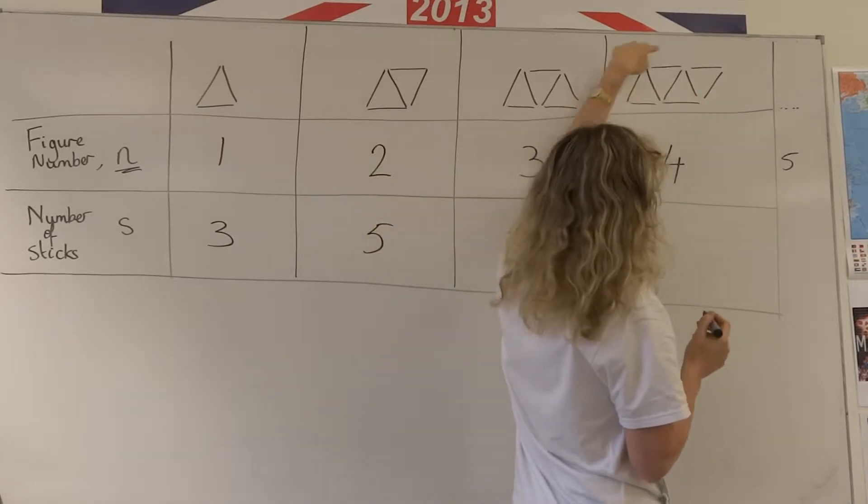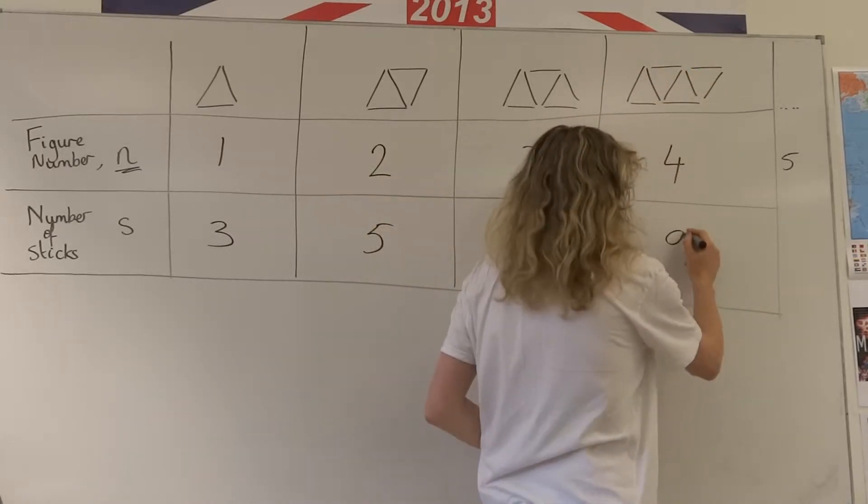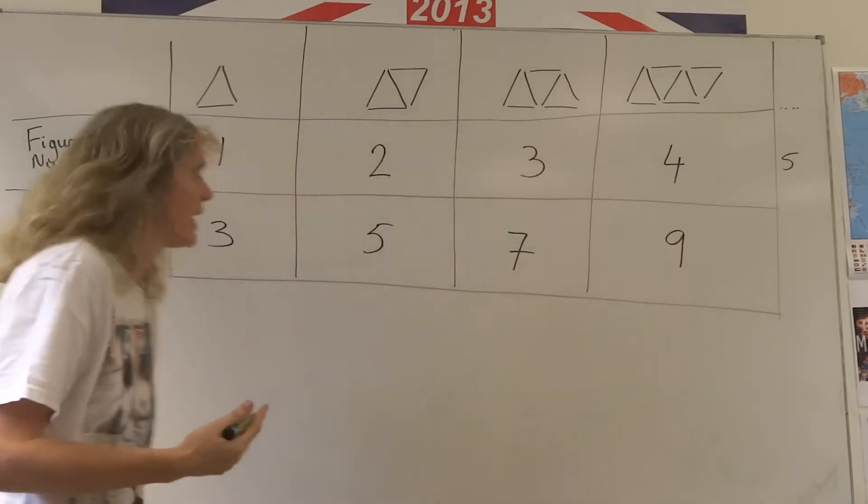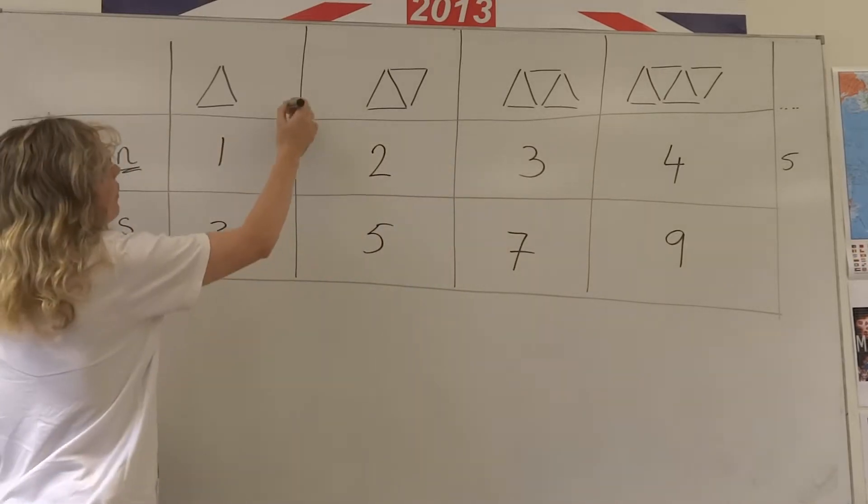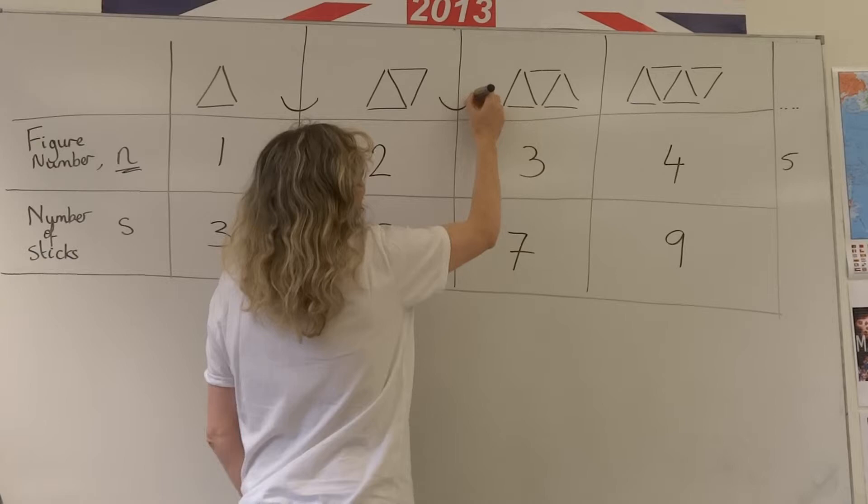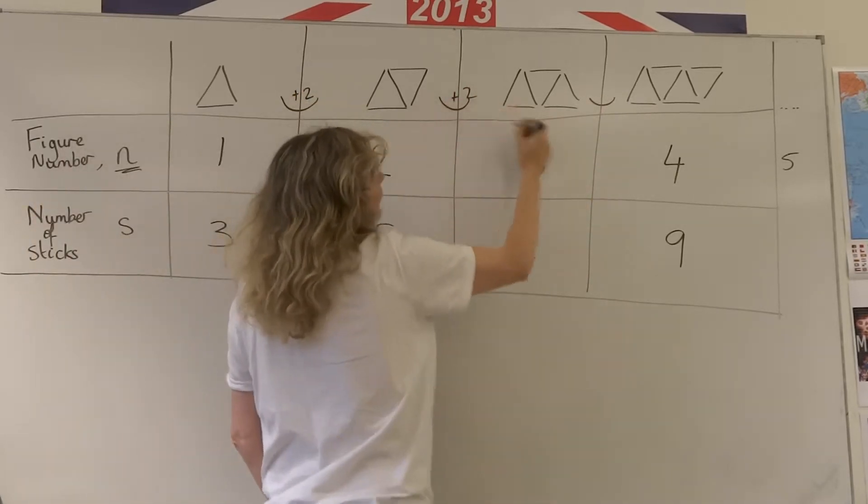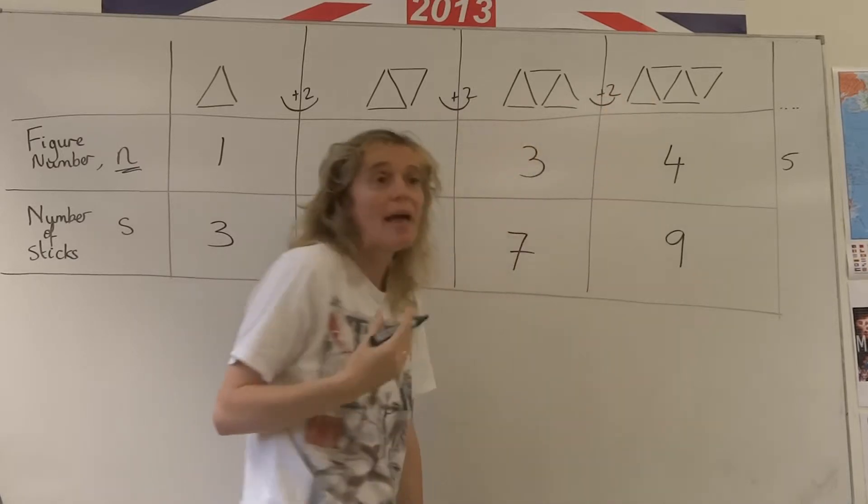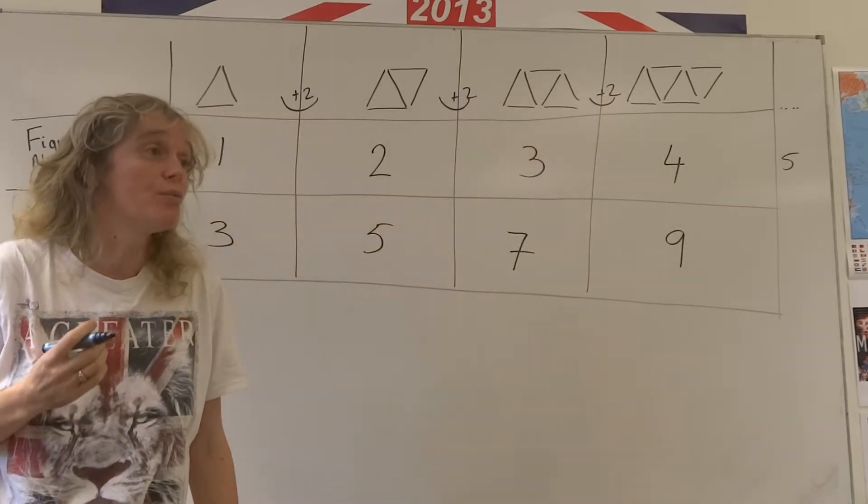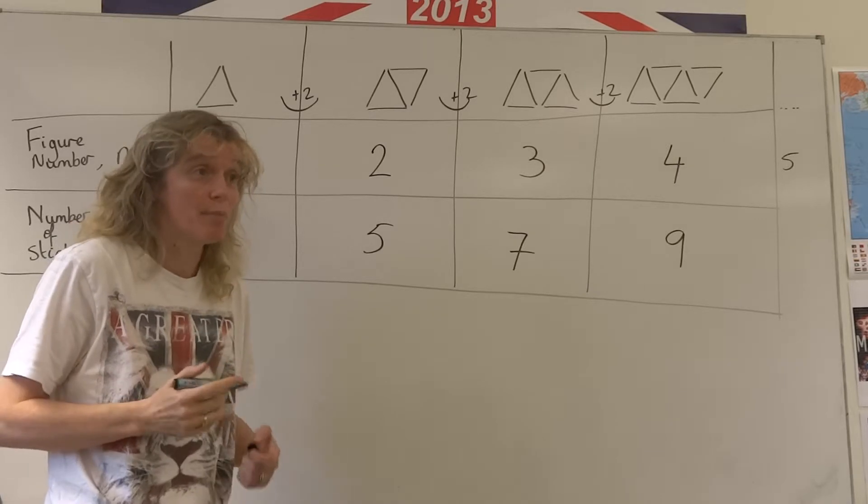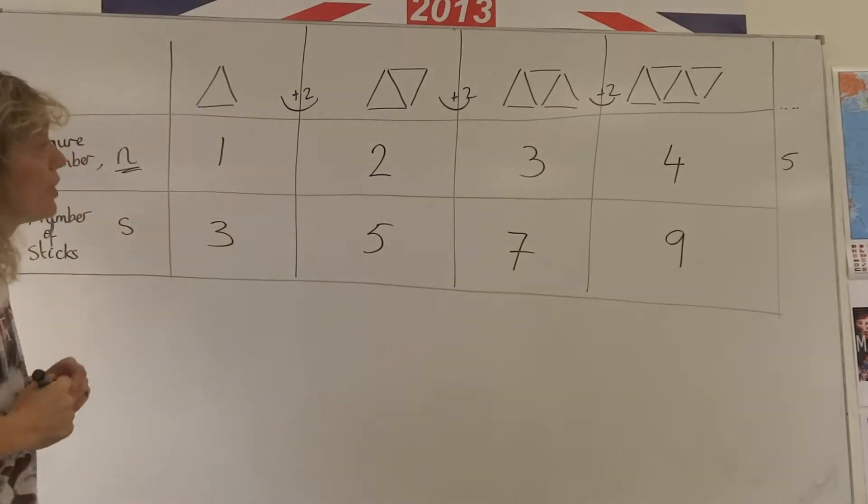Here we're adding another two. We have those seven plus another two. So we've easily identified what the pattern is from here to here quite easily. We're just adding two matchsticks each time. And that number is very important to recognize, the adding number. Because it helps us very much in our formula.